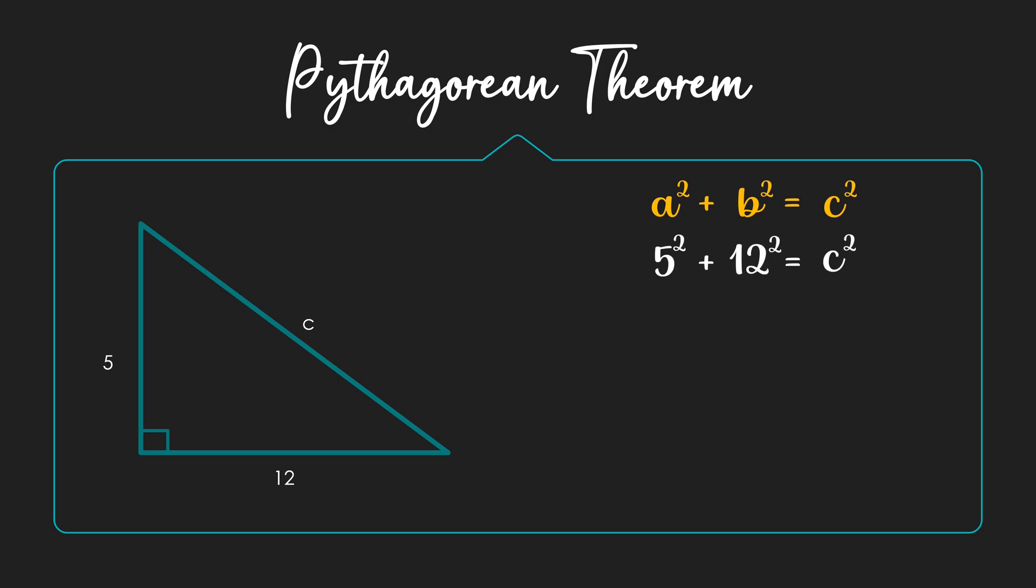Now, any number raised to a square is just that number multiplied by itself. So, I get 5 into 5 plus 12 into 12 equals C squared. If you recall the rule of BODMAS or PEMDAS, multiplication comes in before addition or exponents before addition.